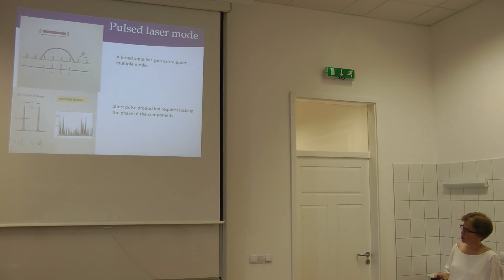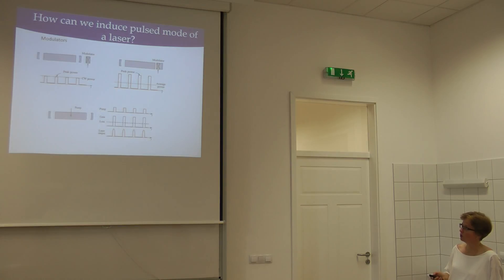So these are the things that you need for short pulse lasers, broadband amplifying medium and some way to lock the phases together. The way to lock the phases together can be done by a modulator outside the cavity or by a modulator inside the cavity, varying the losses of the oscillator, or actually one other thing is you can modify temporally the pumping efficiency of the laser. These cases will all give you short pulse lasers.